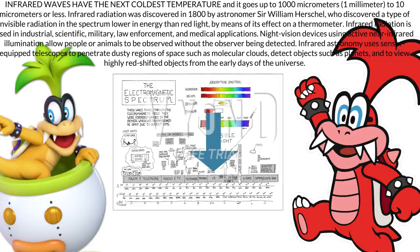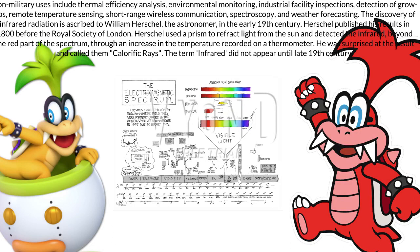Extensive uses for military and civilian applications include target acquisition, surveillance, night vision, homing, and tracking. Humans at normal body temperature radiate chiefly at wavelengths around 10 µm. Non-military uses include thermal efficiency analysis, environmental monitoring, industrial facility inspections, detection of grow-ups, remote temperature sensing, short-range wireless communication, spectroscopy, and weather forecasting. The discovery of infrared radiation is ascribed to William Herschel in the early 19th century. Herschel published his results in 1800 before the Royal Society of London. Herschel used a prism to refract light from the sun and detected the infrared, beyond the red part of the spectrum, through an increase in the temperature recorded on a thermometer. He was surprised at the result and called them calorific rays. The term infrared did not appear until late 19th century.